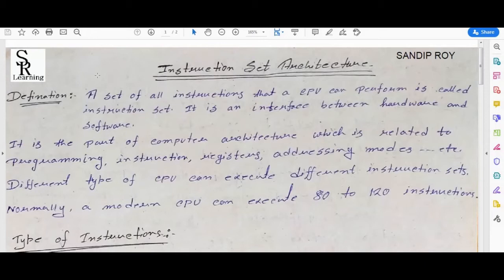First is definition: what is an instruction set? A set of all instructions that a CPU can perform is called instruction set. The instructions that are performed, that is called instruction set. It is an interface between hardware and software, so this is an interface - the most important one that connects hardware and software. It passes instructions to the hardware and to the software, vice versa.